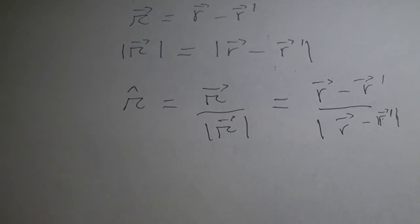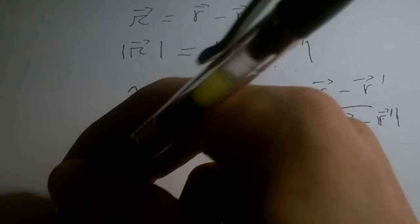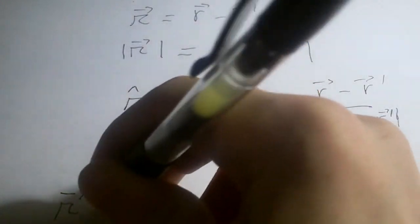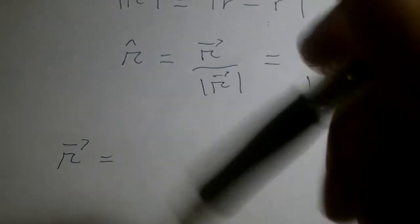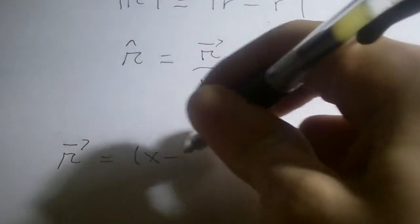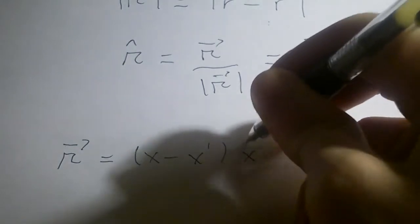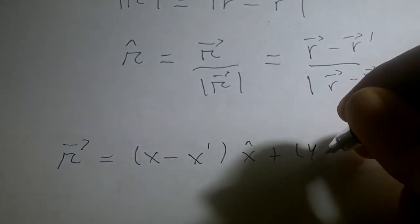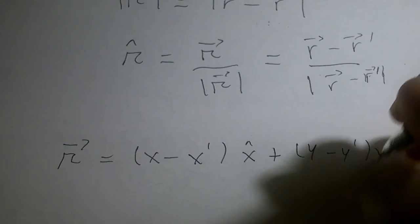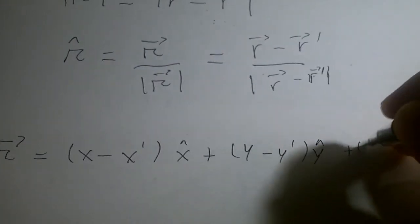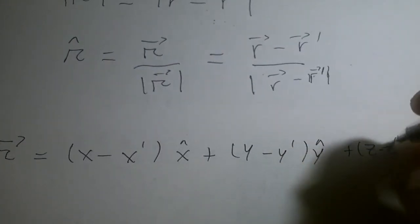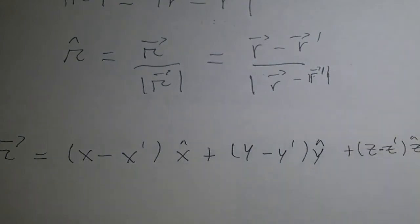In Cartesian coordinates — x, y, z; not spherical or cylindrical, just rectangular coordinates — the separation vector r can be rewritten as: (x minus x prime) x-hat, plus (y minus y prime) y-hat, plus (z minus z prime) z-hat.